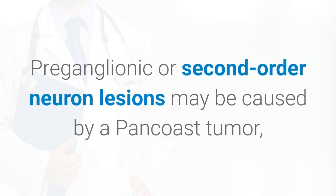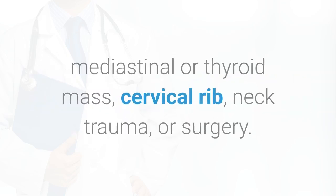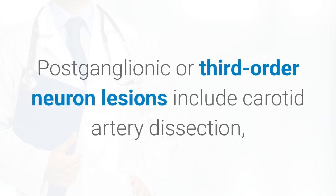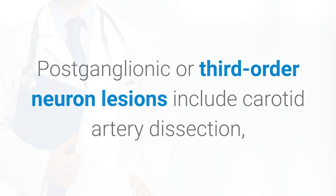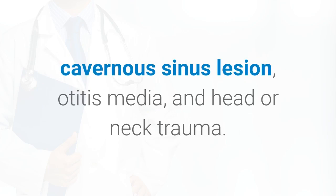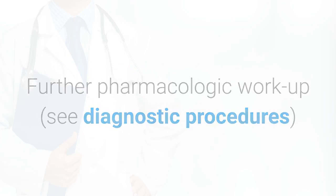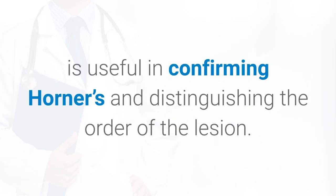Preganglionic or second-order neuron lesions may be caused by a Pancoast tumor, mediastinal or thyroid mass, cervical rib, neck trauma, or surgery. Postganglionic or third-order neuron lesions include carotid artery dissection, cavernous sinus lesion, otitis media, and head or neck trauma. Further pharmacologic workup is useful in confirming Horner's and distinguishing the order of the lesion.